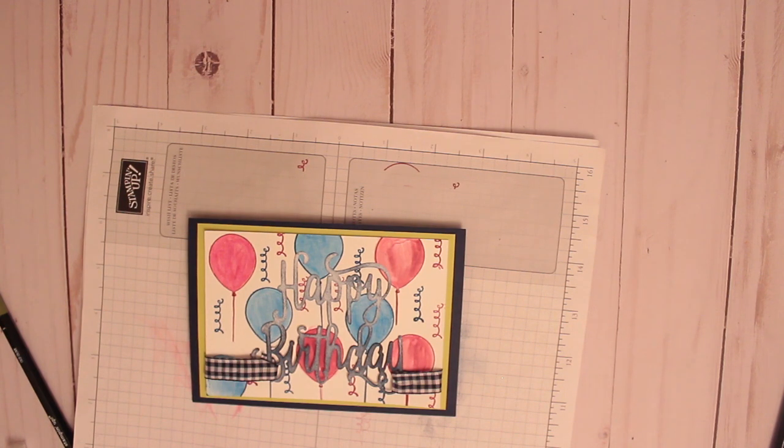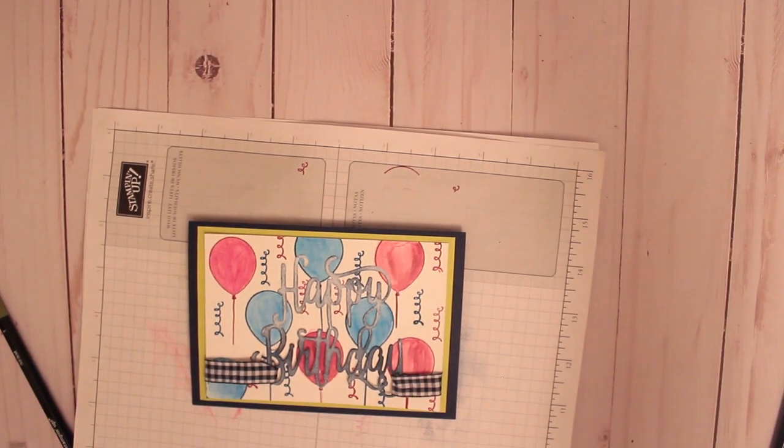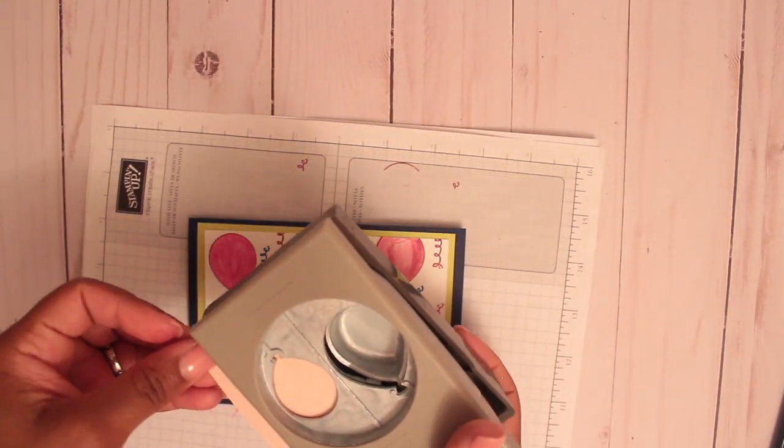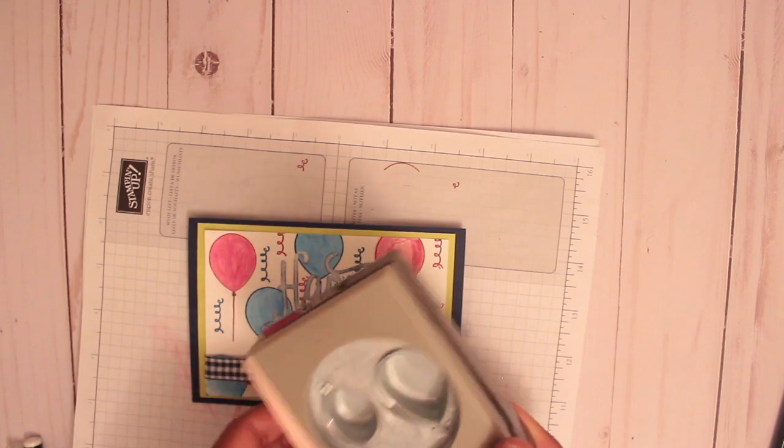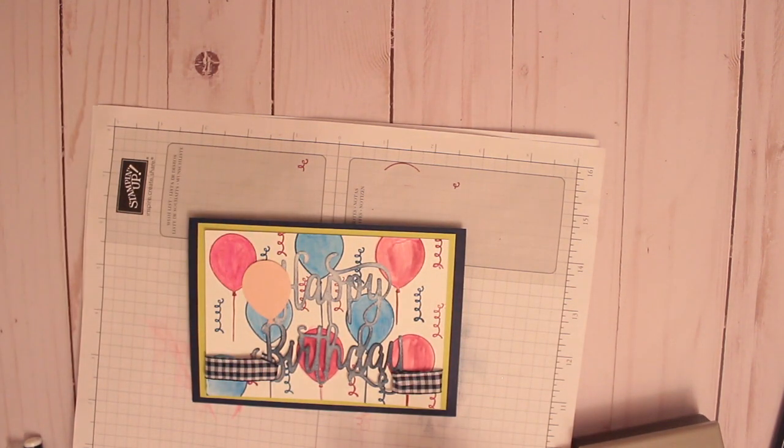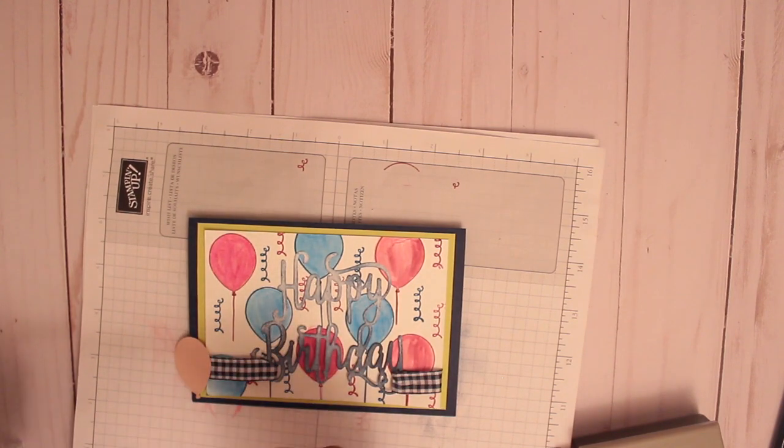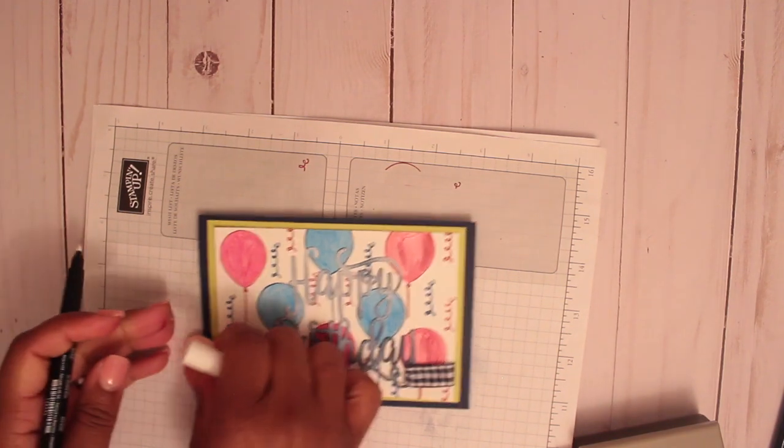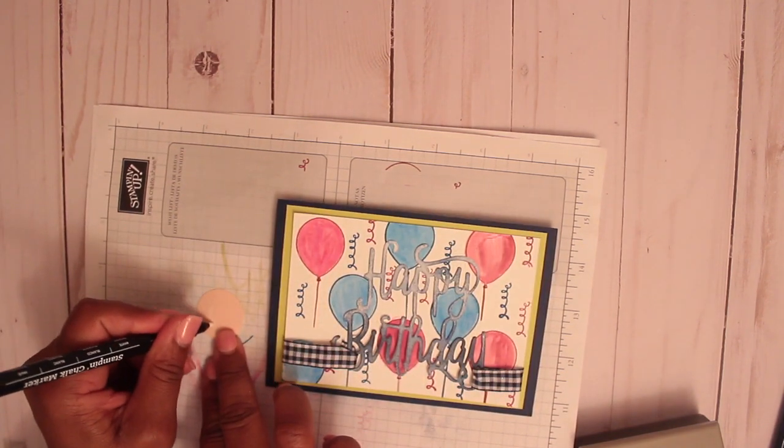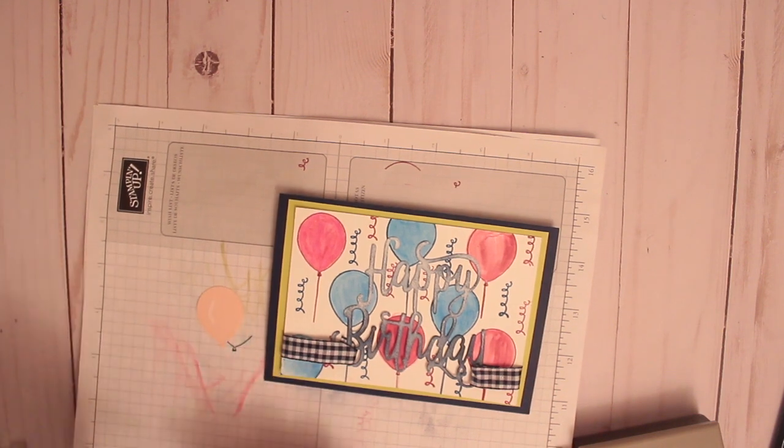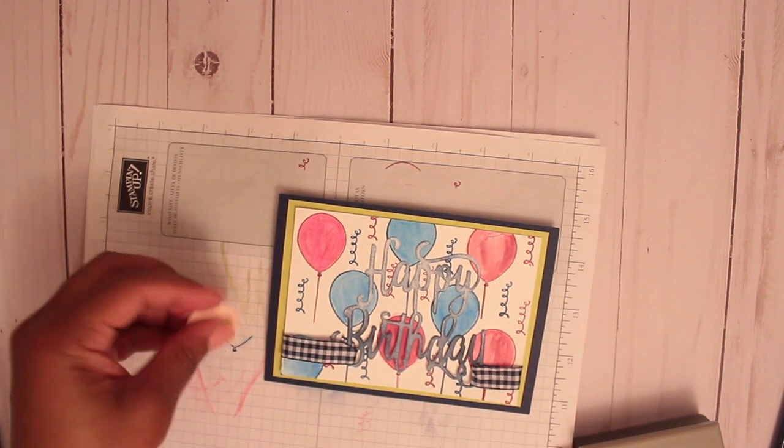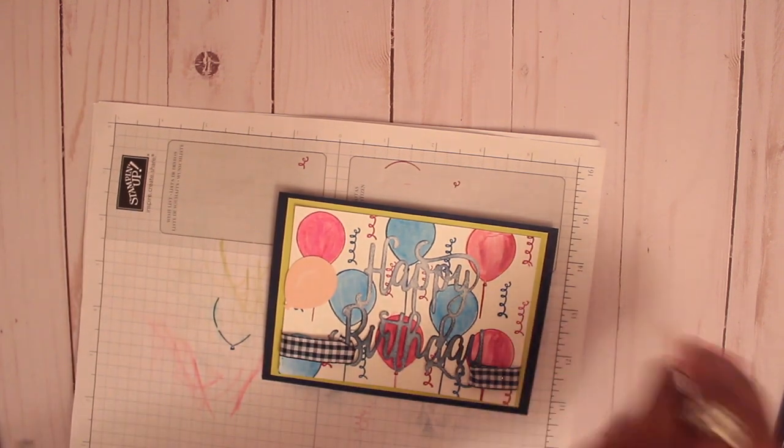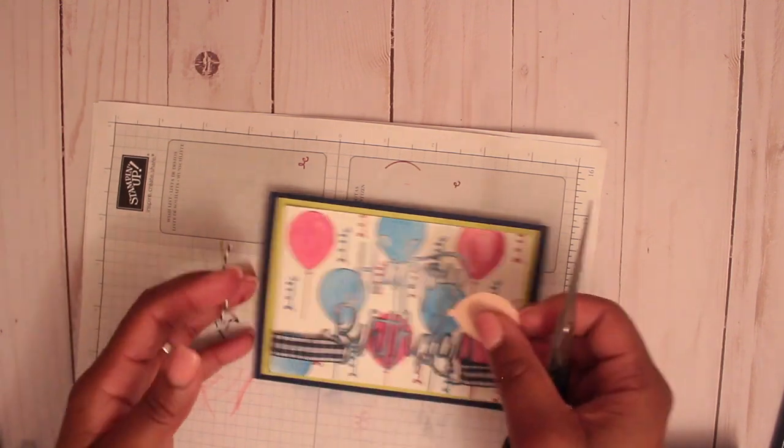And then I'm going to add maybe a three-dimensional balloon to that. This is my balloon punch. I'm just going to punch a pink, we'll see how it looks. I'm going to use the stamping chalk marker, put a little white line on it, make it look more dimensional.